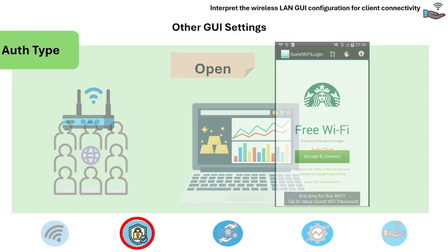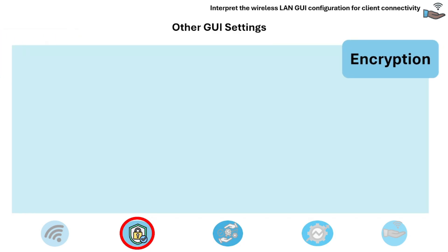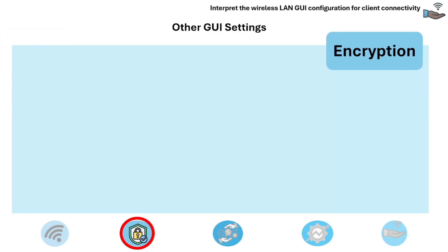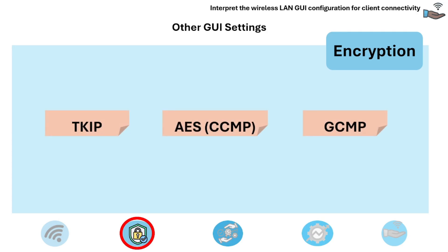There are also different encryption settings. The three encryption types — TKIP, AES-CCMP, and GCMP — are used in Wi-Fi networks to secure data transmission.